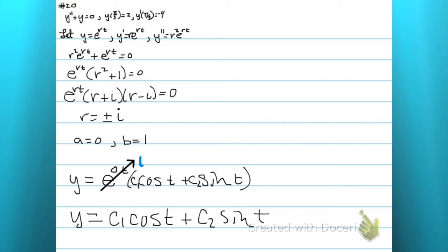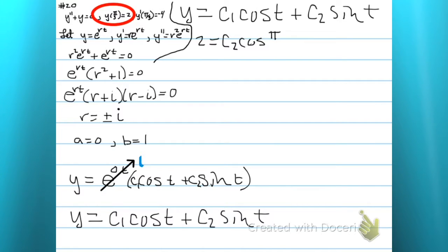And we can use our initial conditions now. Let's take this one first. Since y of pi over 3 is 2, then 2 is equal to c1 cosine pi over 3 plus c2 sine pi over 3.